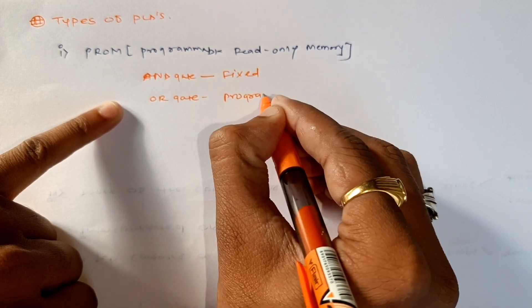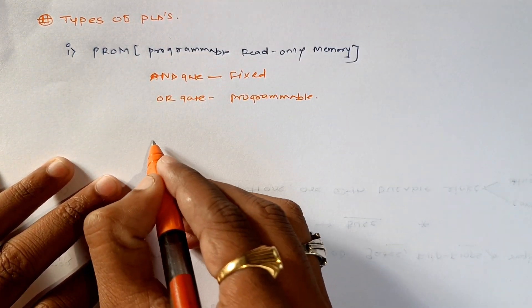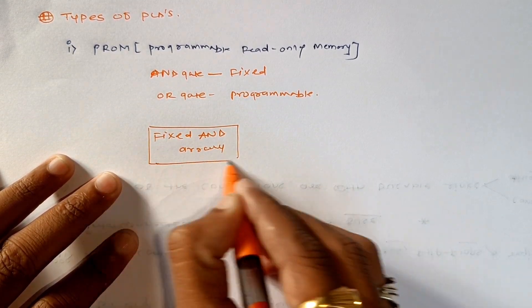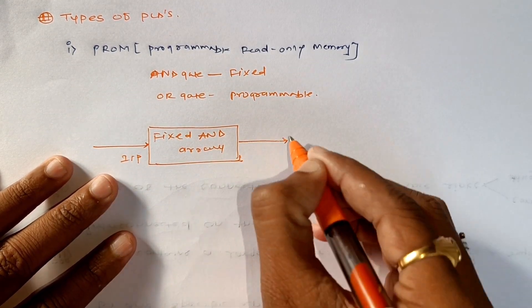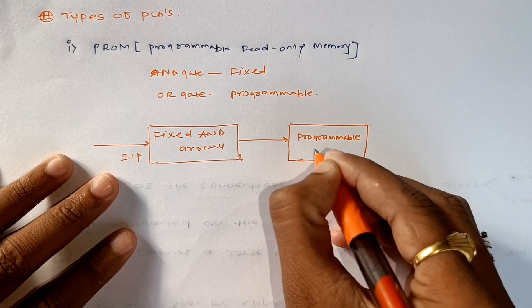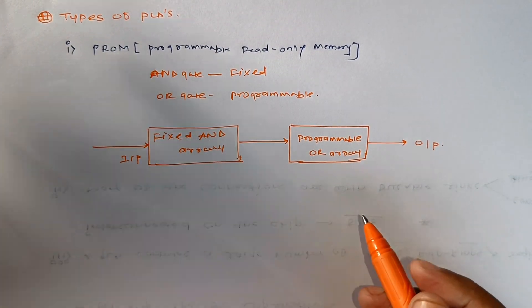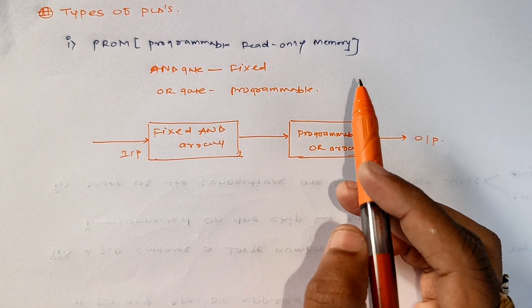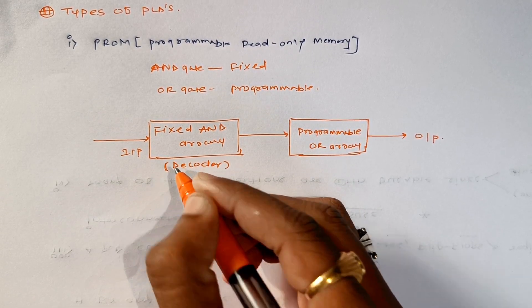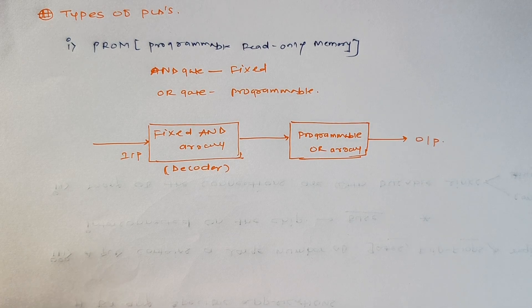Whereas OR gate is programmable. So we can write this in terms of diagram also. We have fixed AND array just connected to the inputs, and programmable OR array. This will be the output. So this becomes the structure for programmable read-only memory. As far as read-only memories are considered, we need an element that can decode the address and the data lines also, so this one will also be called the decoder. This is our first type.